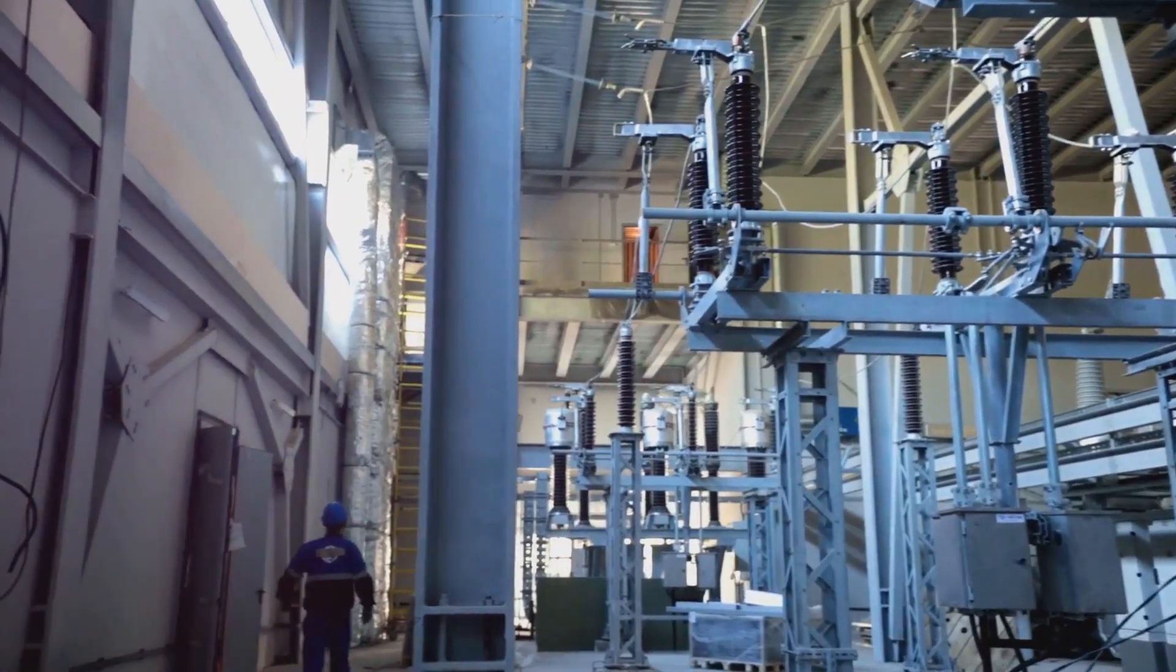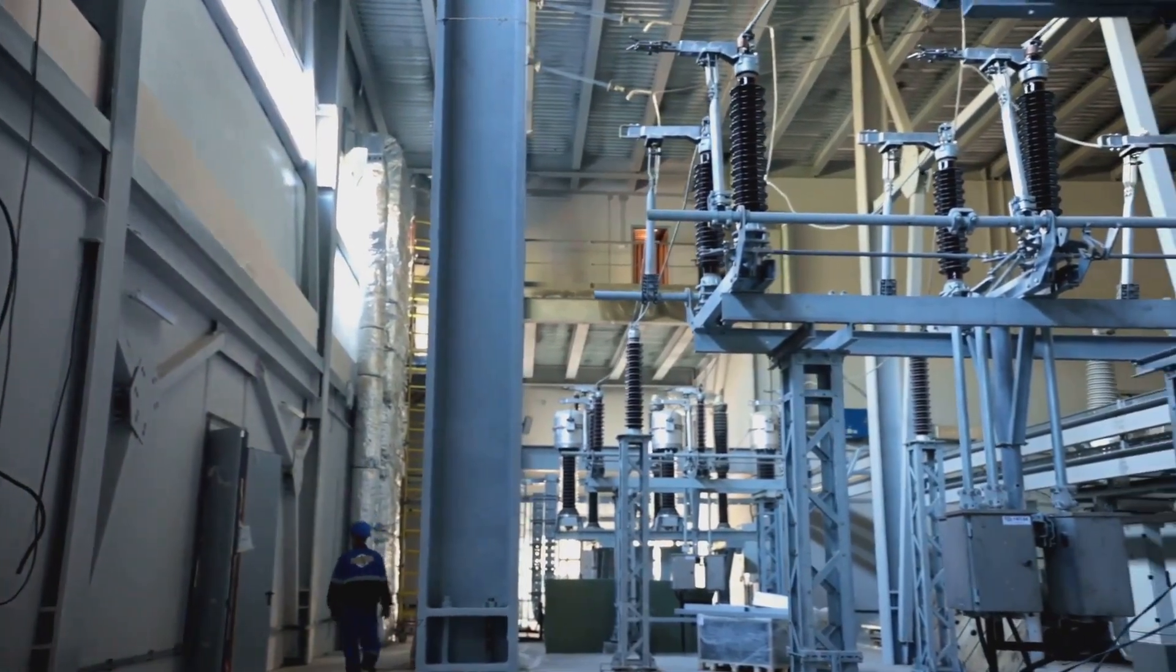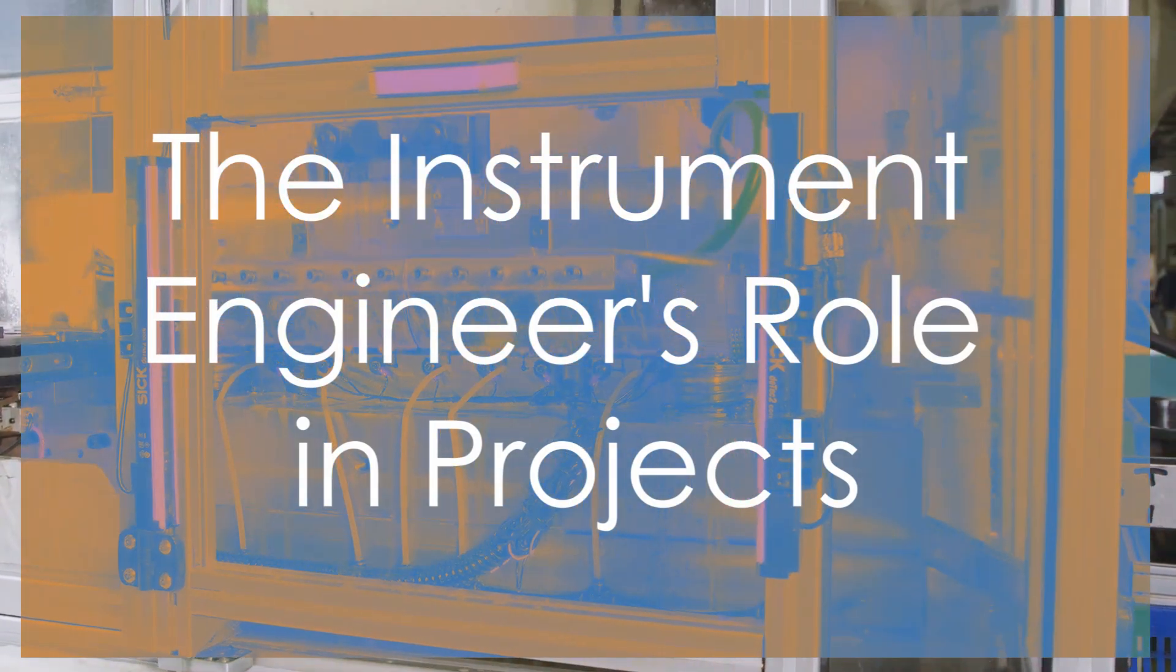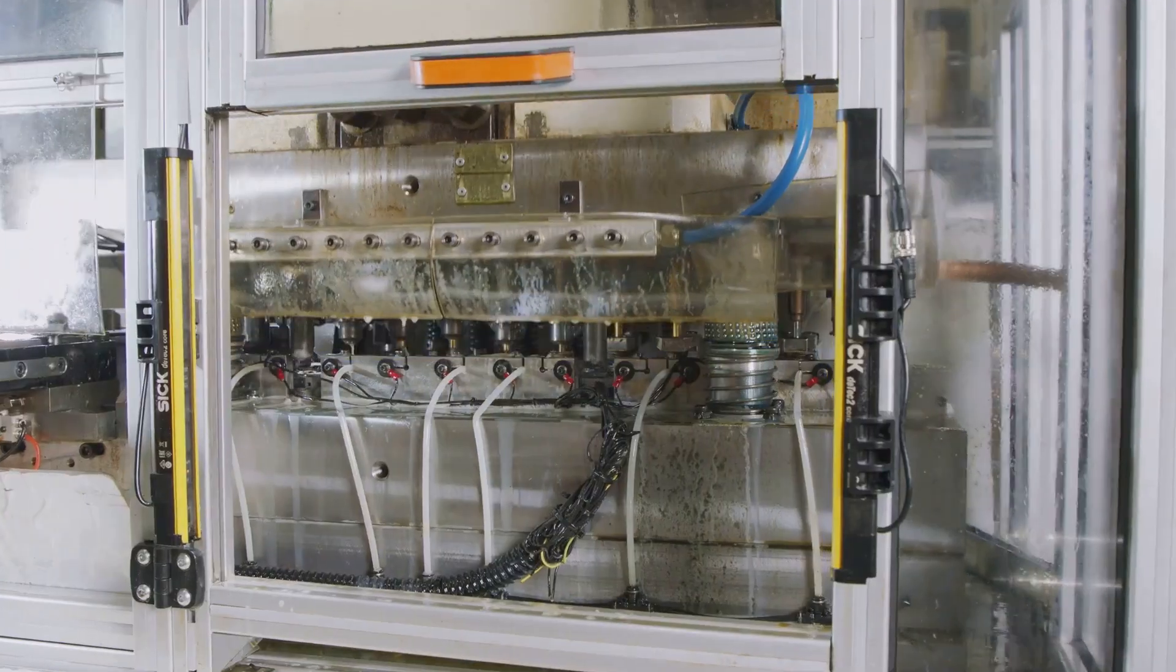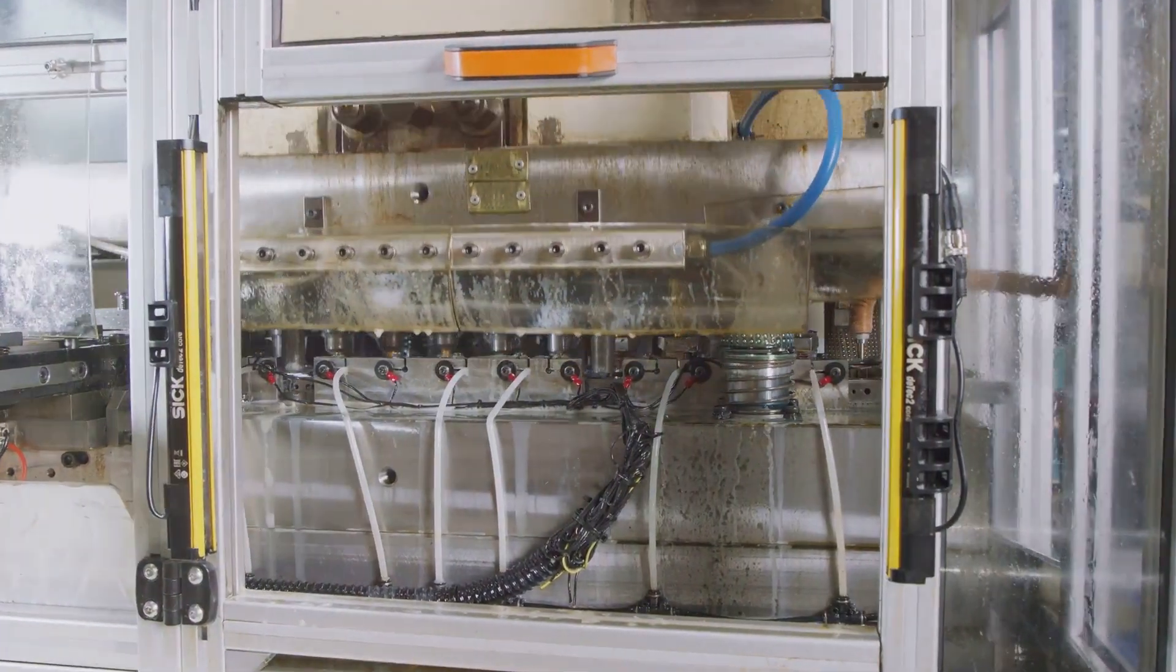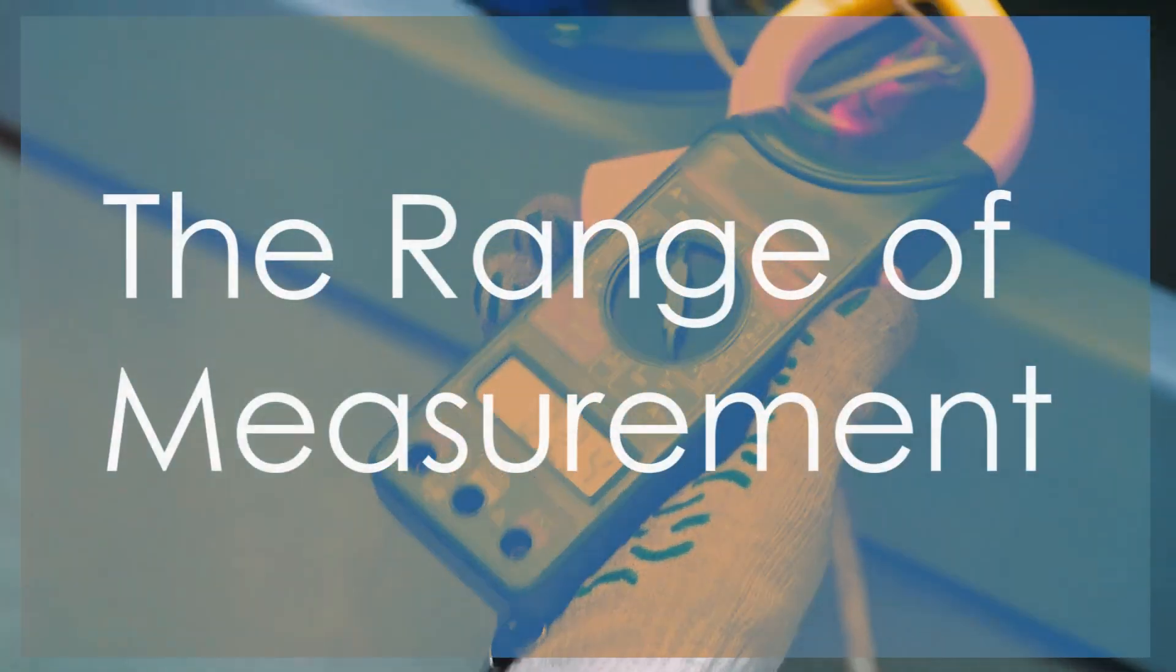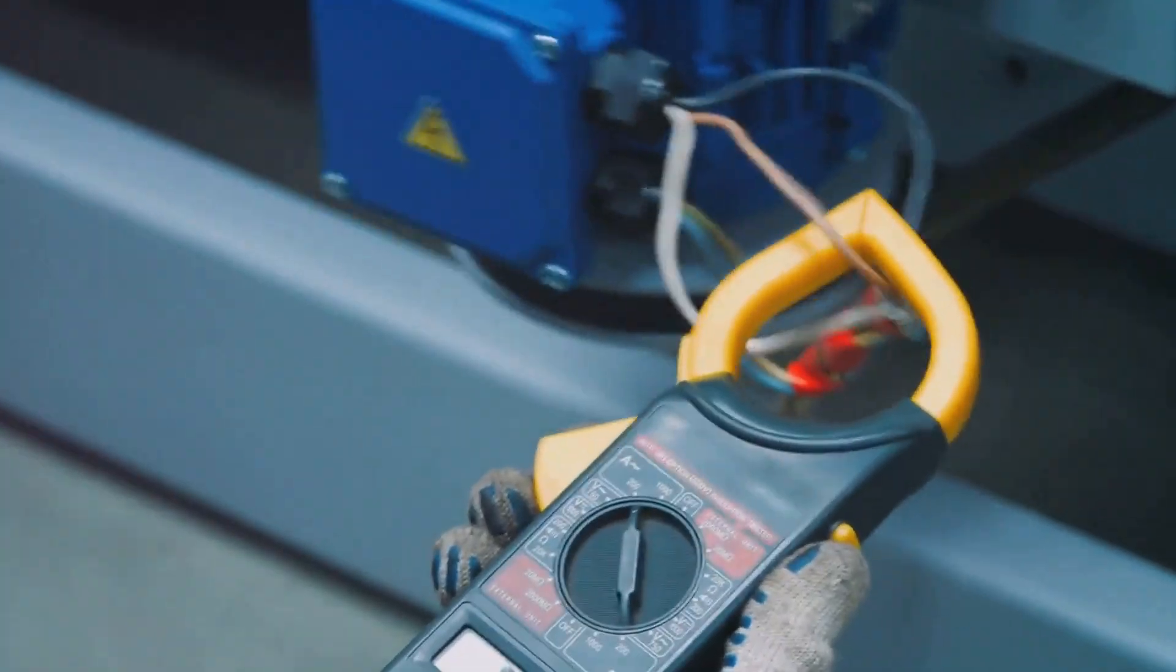DCS versus PLC: the control system showdown. DCS and PLC are the heavyweights of industrial automation, each with their own strengths and weaknesses. Safety is paramount in instrumentation, and we'll talk about how to keep ourselves and our equipment safe.